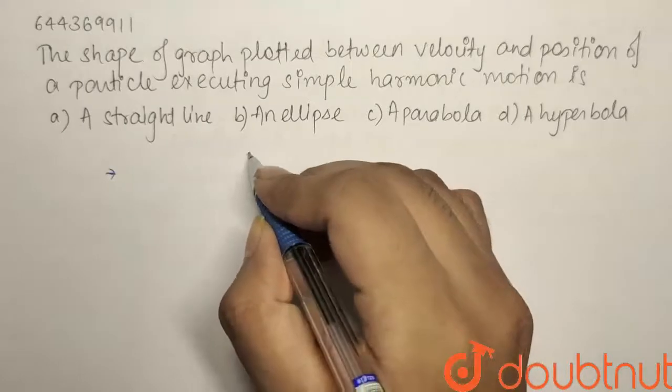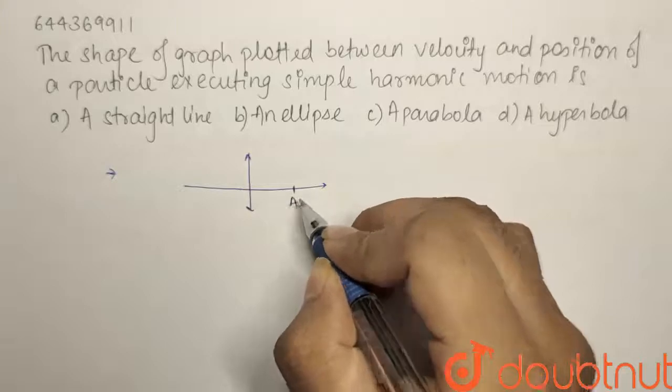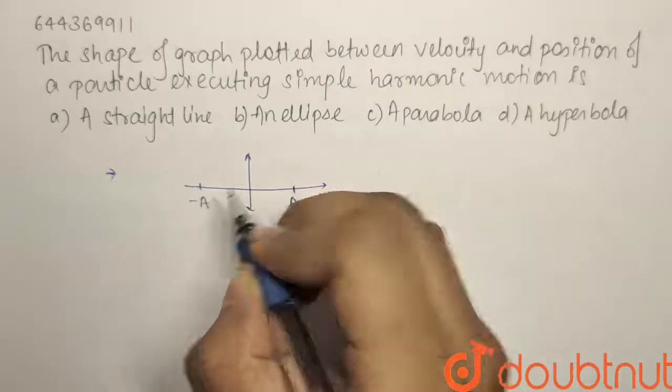If you know that a particle is going through SHM, this is its extreme position A and this is its extreme position minus A.